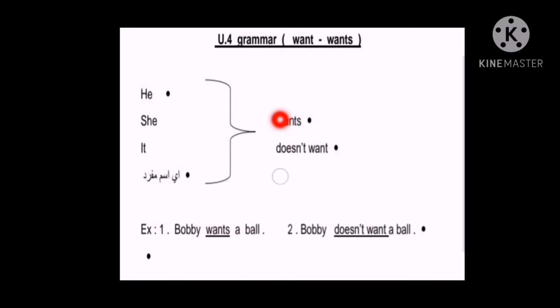If we want to make it negative, negative means denial. How do we make it negative? Doesn't. Doesn't. Because he, she, and it take doesn't. And after doesn't or don't, the verb always comes in base or infinitive form. So doesn't want. We don't say doesn't wants. No way, it doesn't work. So he doesn't want, she doesn't want, it doesn't want.